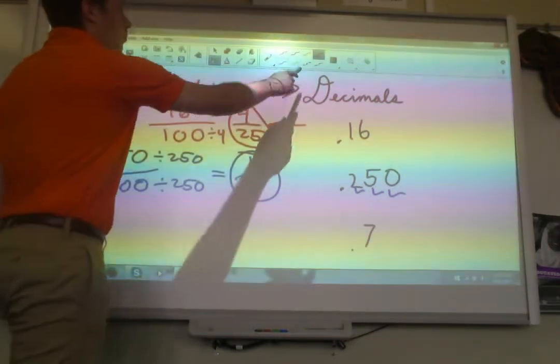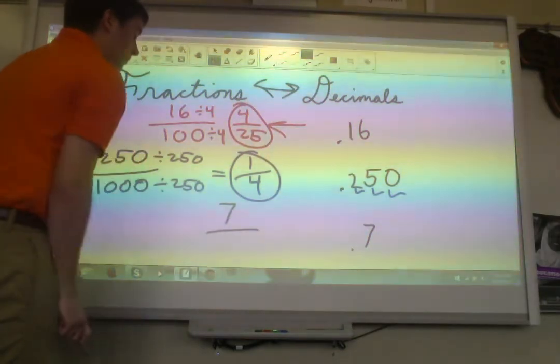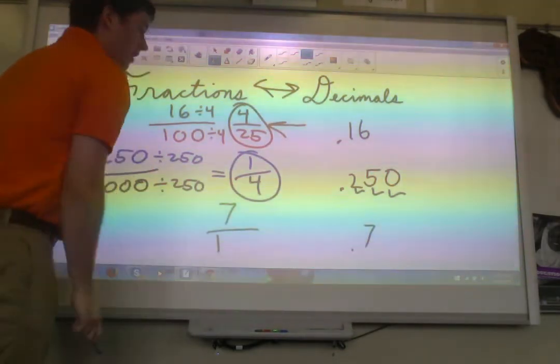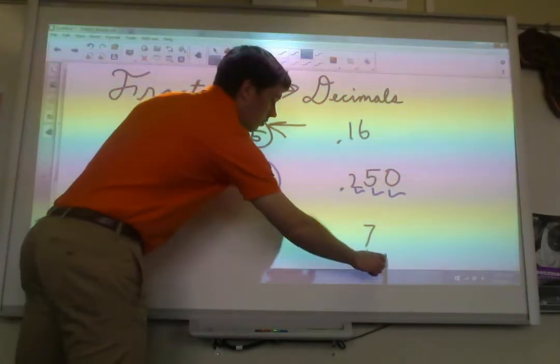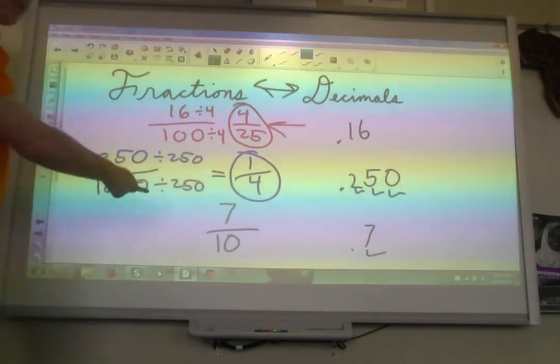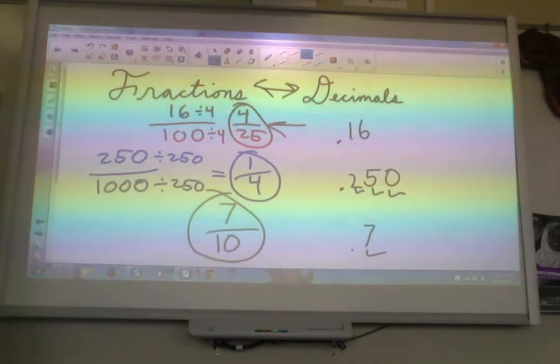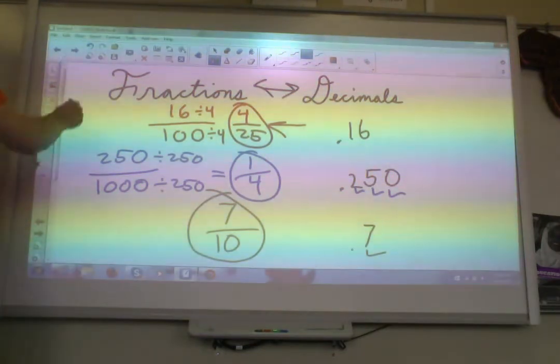Last one here, 0.7. Okay? Fraction bar. Put the 7 on top. We need a 1 and then, how many zeros? Just one zero this time. 7 over 10. Now, 7 over 10 cannot be simplified, so that ends up being our final answer for that problem. 7 over 10.